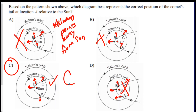That wraps it up for the solar system. Summary: know rotation and revolution and what they cause, know the characteristics of both types of planets, and know how to read the solar system data chart. I hope this was helpful and I will catch you in the next one. Good luck!